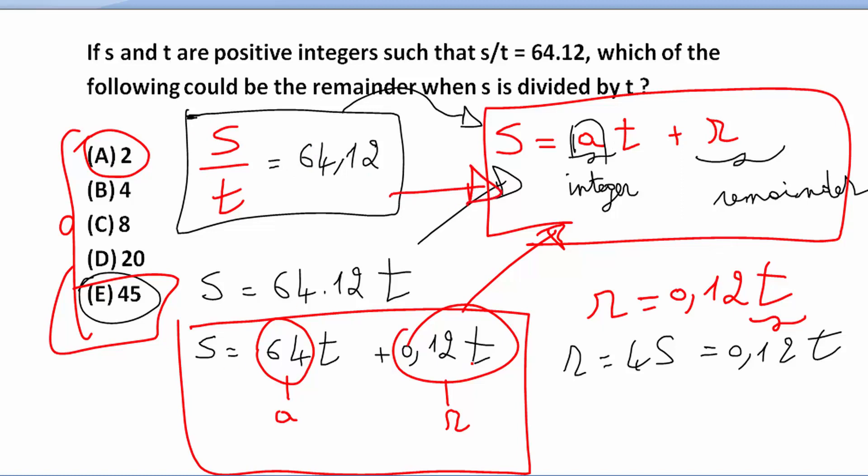I had this form. So here we have an integer plus the remainder. This is the remainder. So which one of these is the remainder? I have to respect the condition that T is an integer.